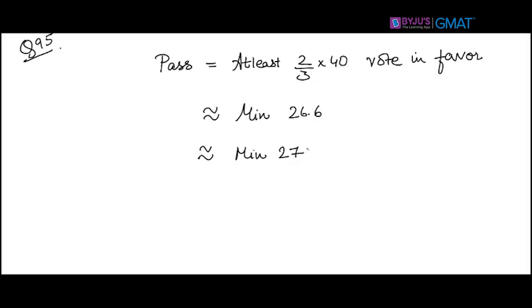When I say minimum, it can be more than 27 also—so 27, 28, 29 members and so on up to 40 can vote in favor and the resolution will pass. We have to find out: what is the greatest number of members who could vote against?